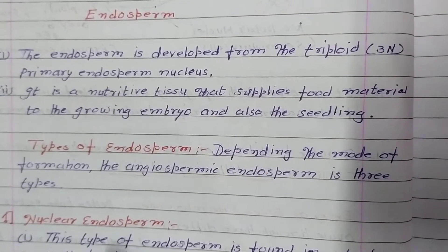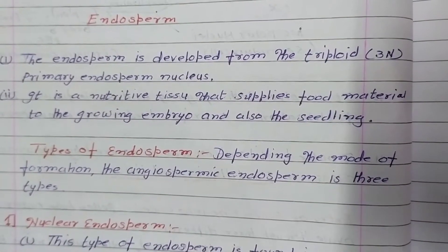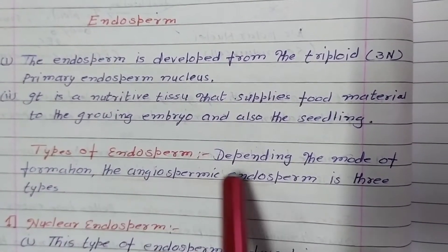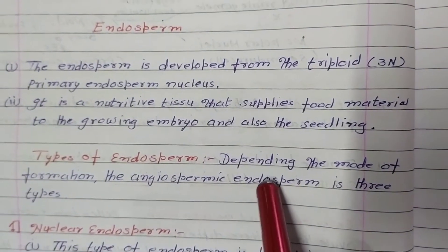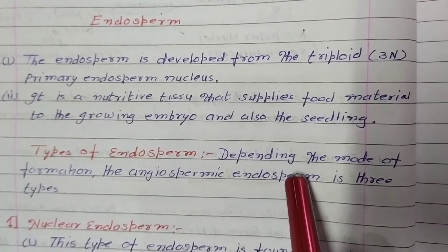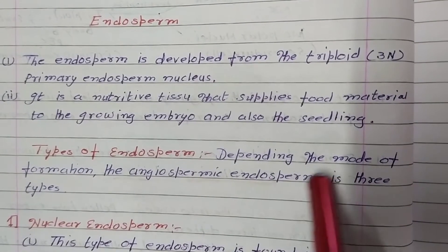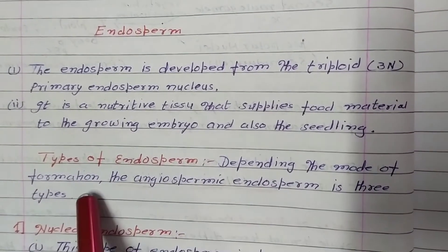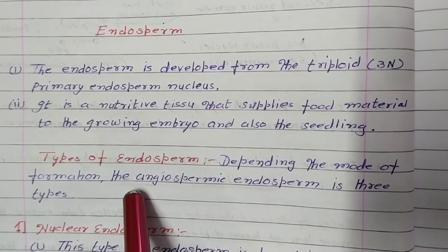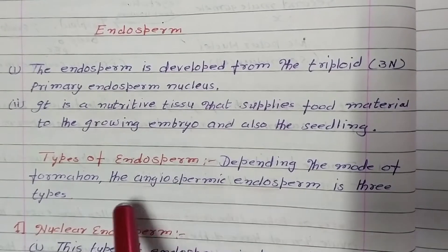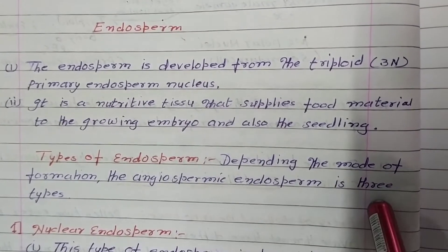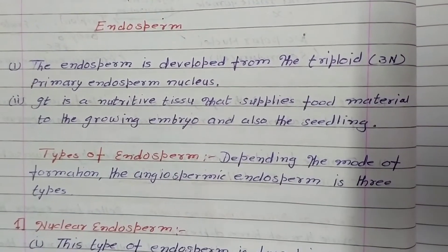Now, the different types of endosperm. Depending on the mode of formation, the angiospermic endosperm is of three types.